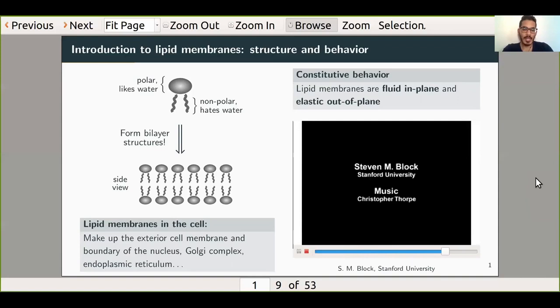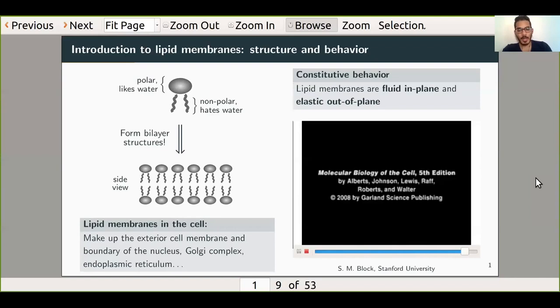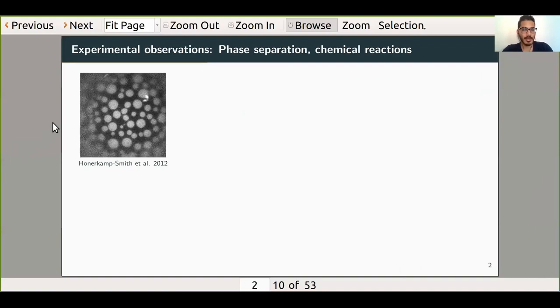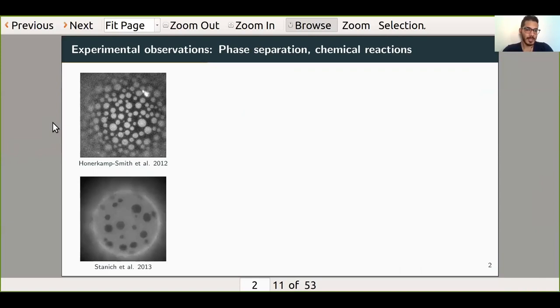It turns out that lipid membranes can also exhibit further complex behavior. Imagine that I have a system with multiple different kinds of lipids. In this video that I'm going to show you right here, there are several different kinds of lipids and they're in this large spherical structure. It turns out that under certain circumstances, the lipids can phase separate. I get two different phases that are in coexistence. Here's another video showing the same thing, where you can see that one of these phases is clumping together and forming larger domains because it's energetically favorable to do so.